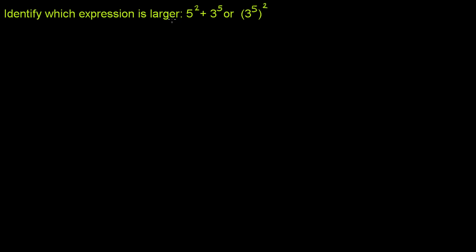So let's just work this out. Let's do the first one: 5 squared plus 3 to the fifth. What is 5 squared? 5 squared is the same thing as 5 times 5, which is equal to 25. So that right there is 25.